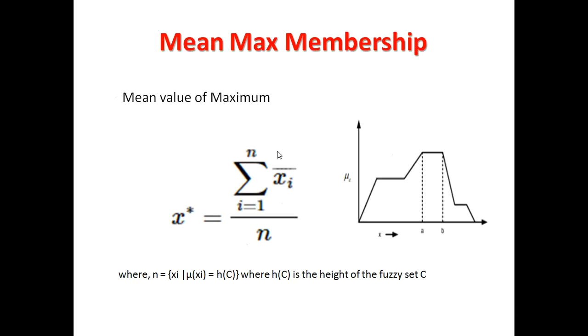Same, we have the other membership method that is Mean Max Membership Method. So what do we do here? We have the mean value of maximum. As I studied in the previous example, the height method is unique. But here we have two points A and B which represent the same height and it is the highest. So what do we use? Mean value of maximum.